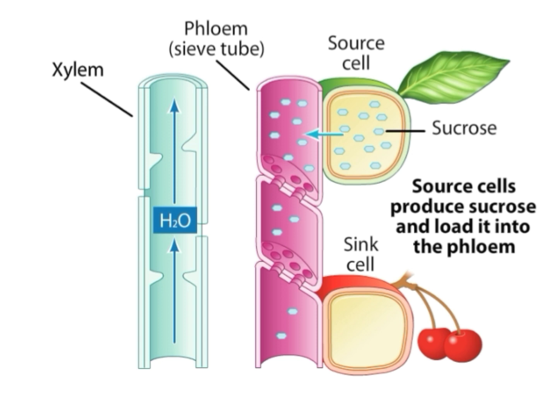Photosynthesis takes place in the leaves, where sucrose is prepared. It is then passed through the mesophyll cells into the vascular system — specifically into the phloem. In the vascular system, both xylem and phloem are present, but sugars are transported through the phloem, that is, through the sieve tubes.